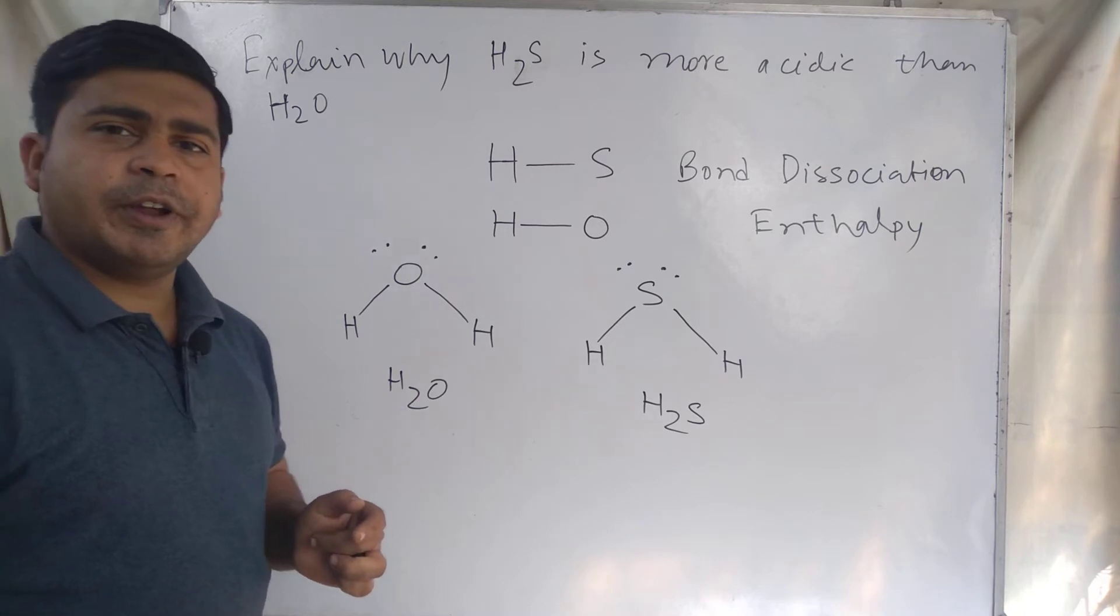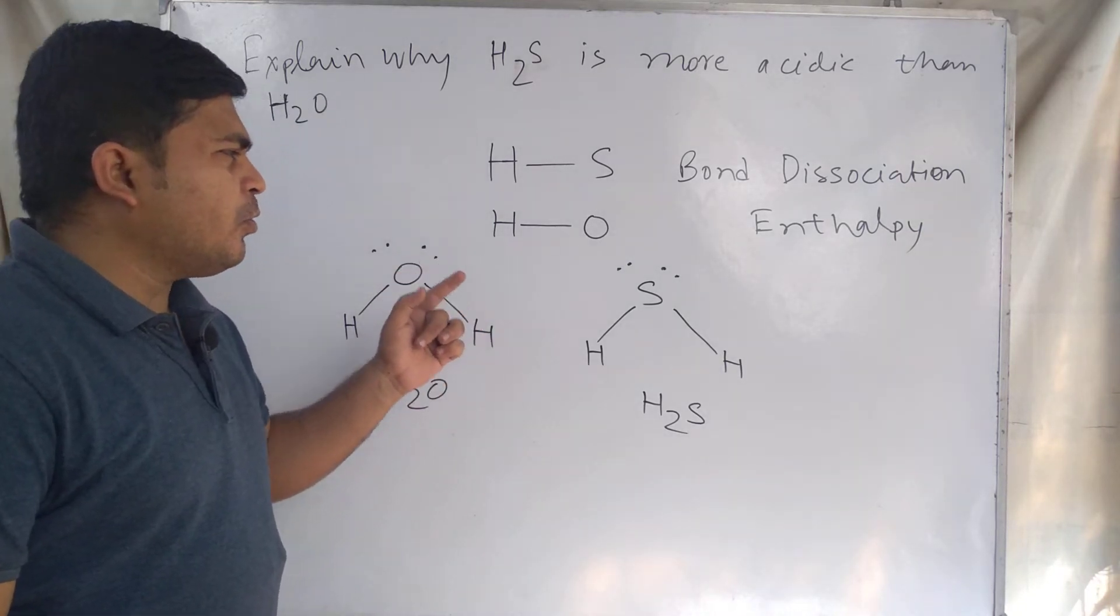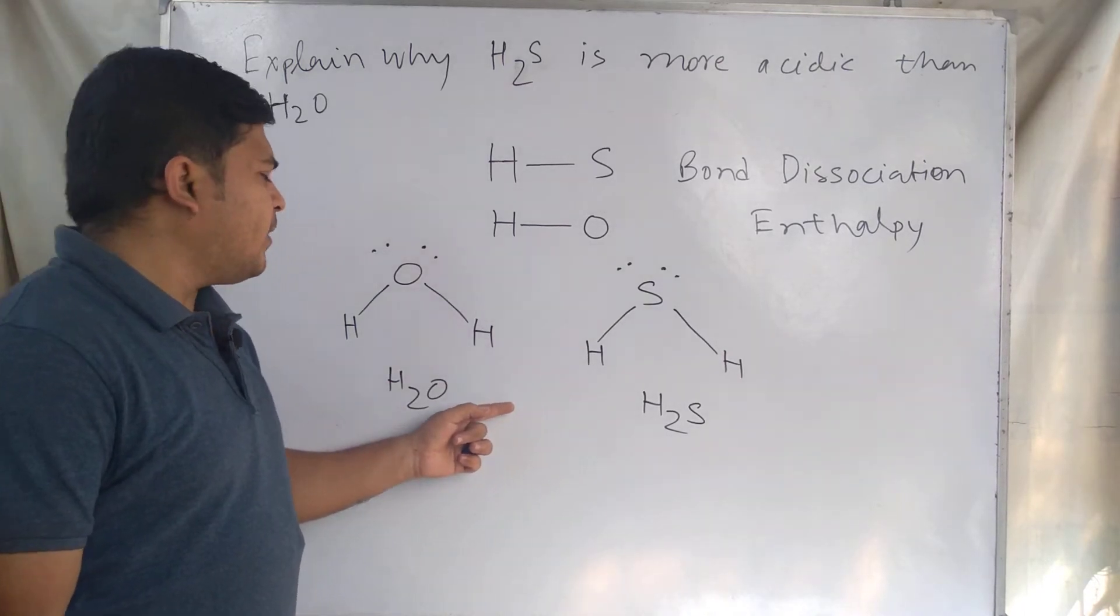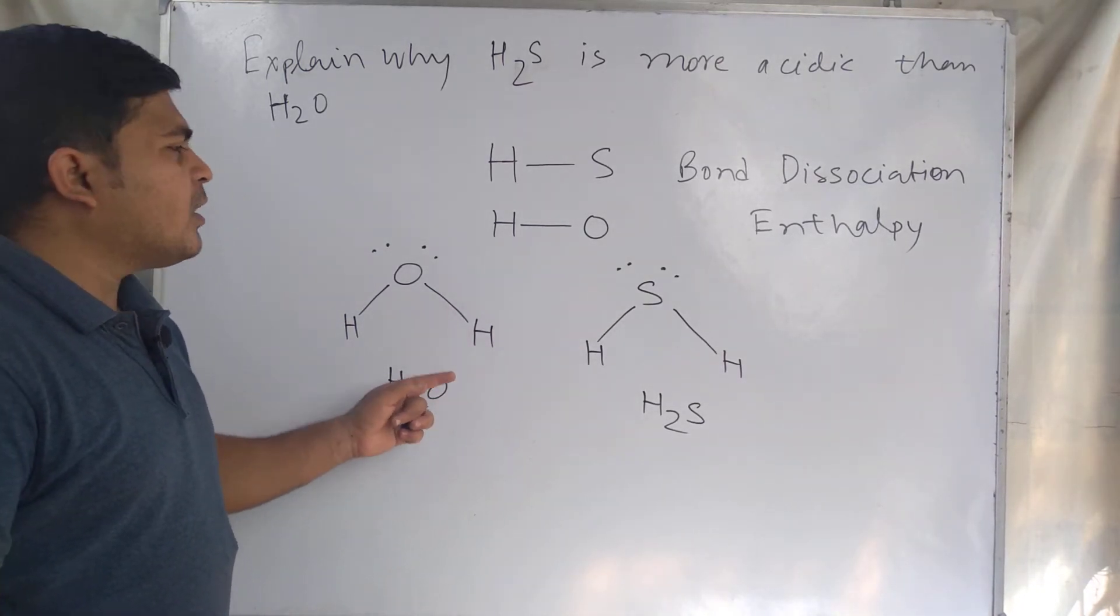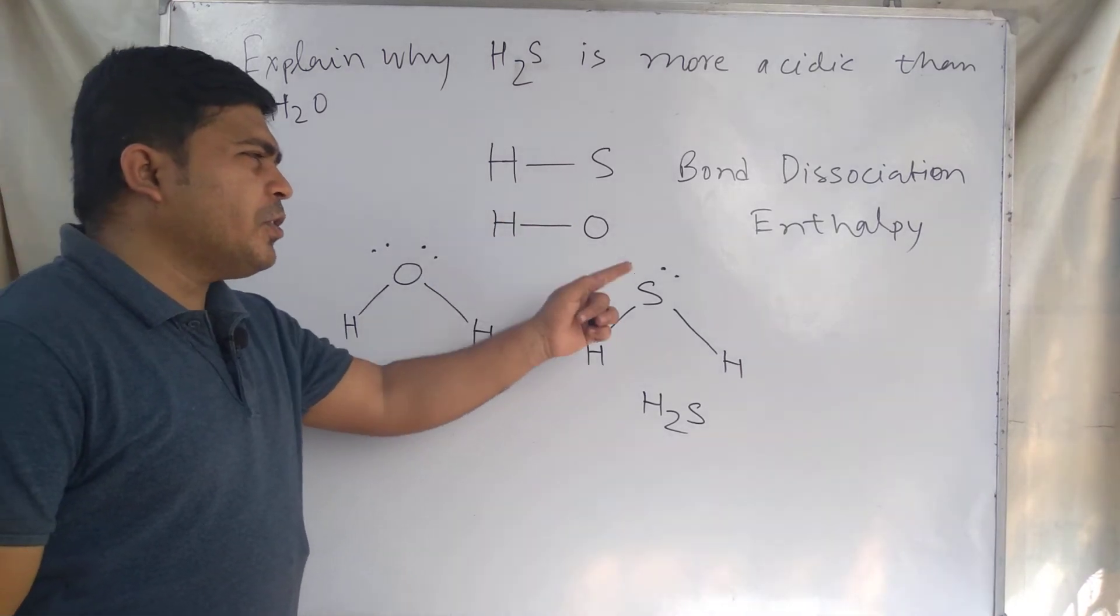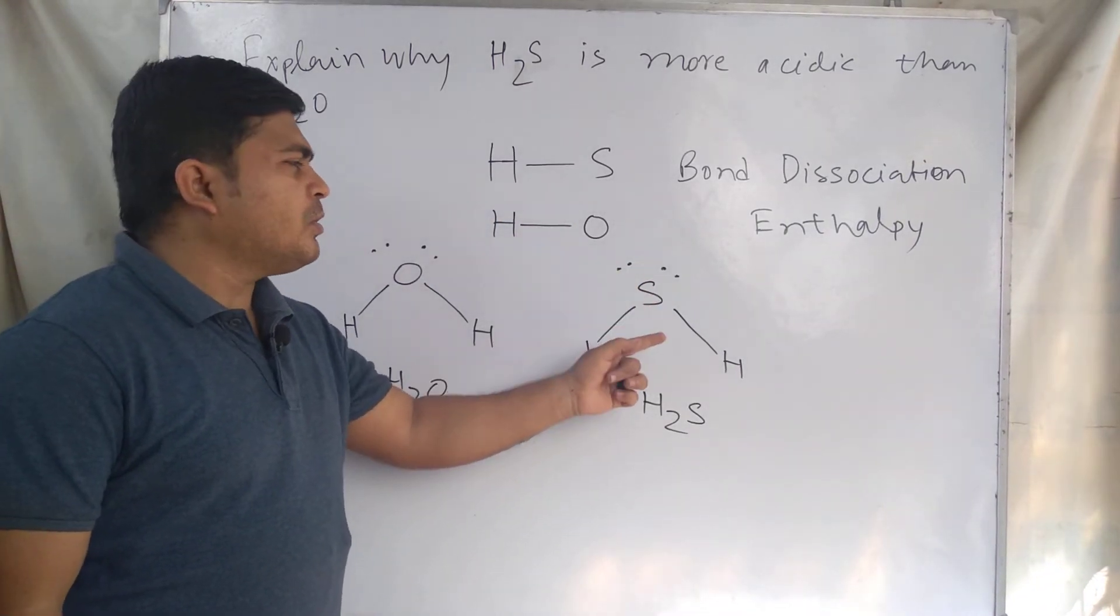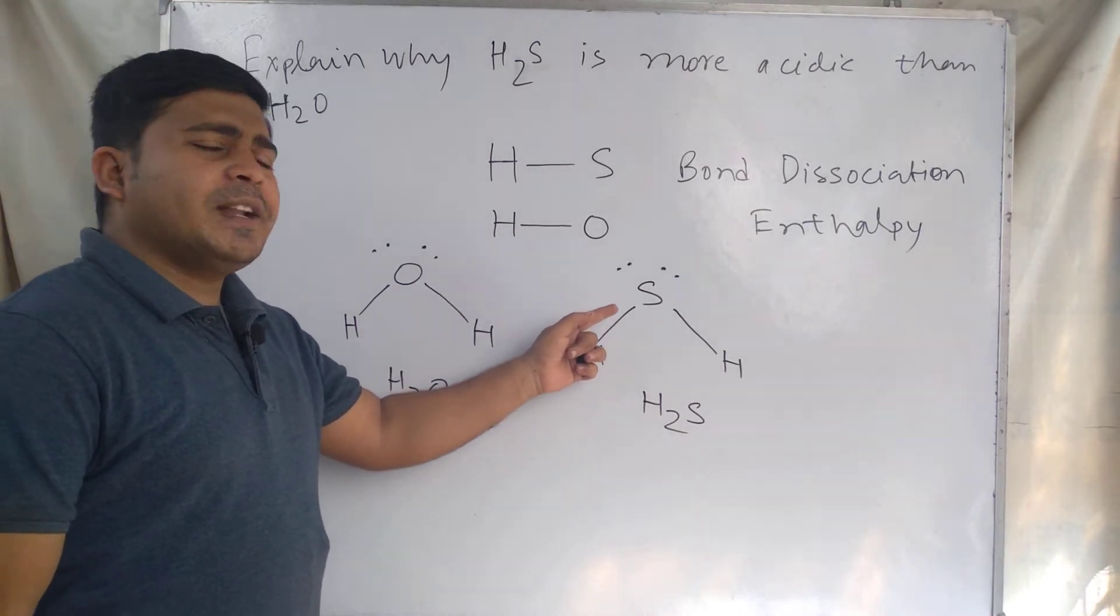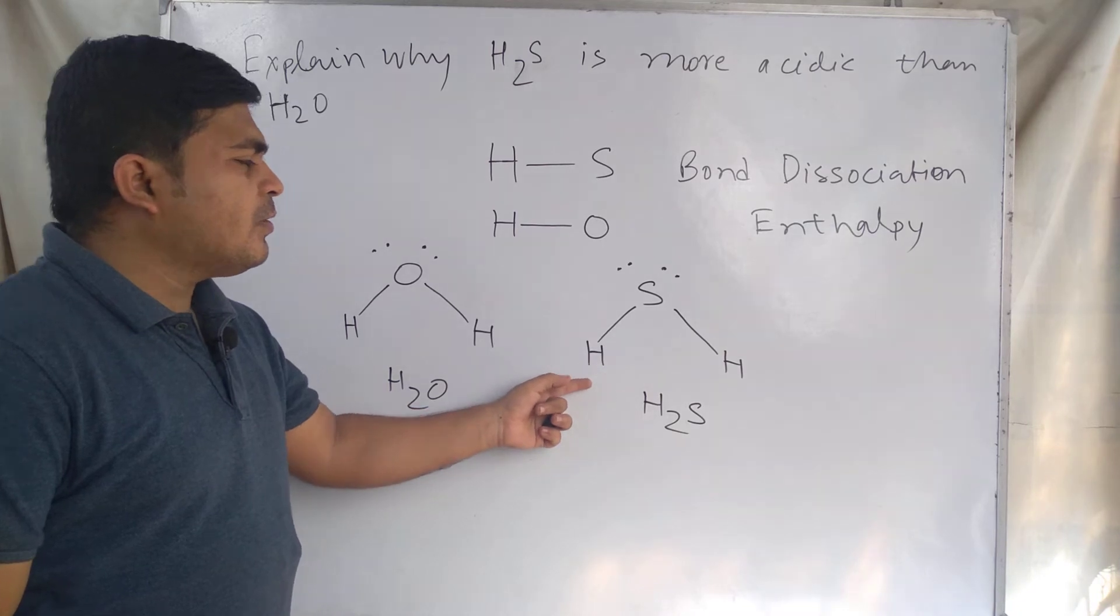Electronegativity cannot explain why H2S is more acidic than H2O. The only answer can be given by the bond dissociation enthalpy. Less bond dissociation enthalpy means that bond can easily break to release a proton.